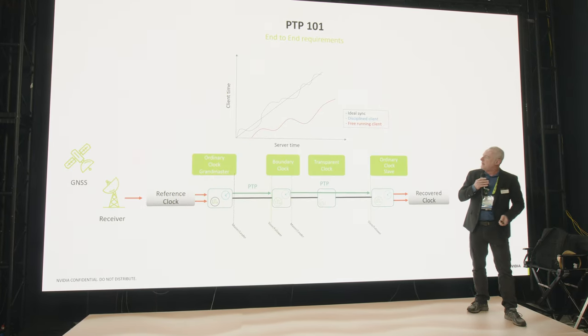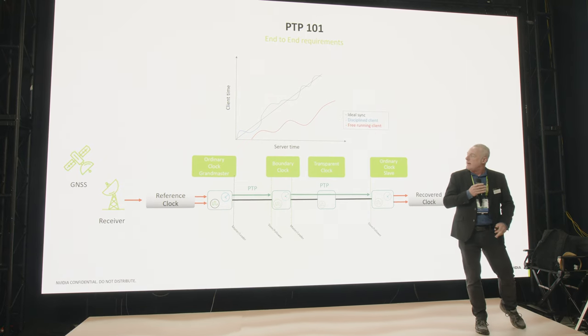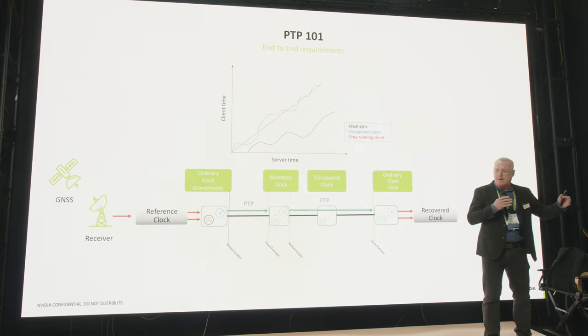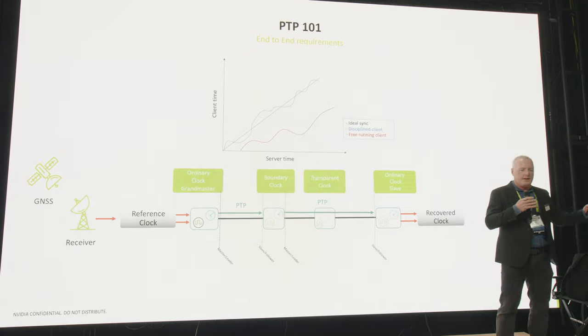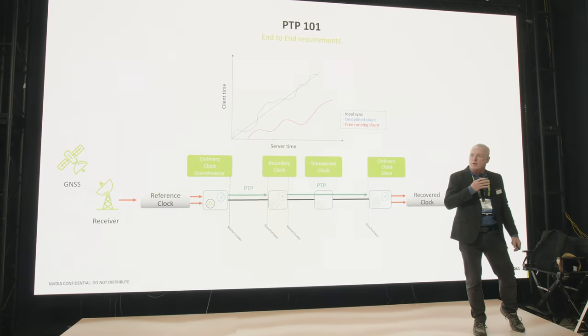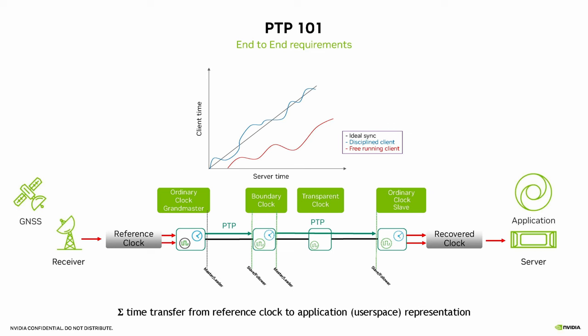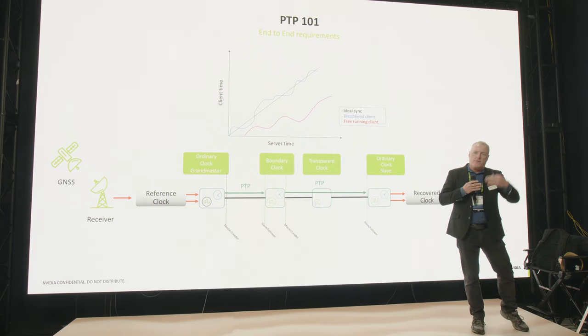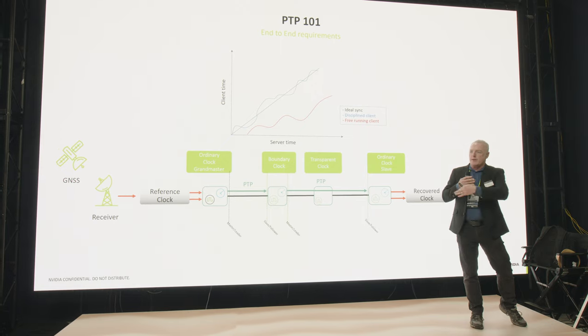PTP — the Precision Time Protocol — is based on IEEE 1588 and satellite time. You have a grandmaster in your facility that manages time from the satellite, and one or more switches between the grandmaster and all systems in your facility. PTP messages propagate timing through the network, and ultimately each system has a PTP hardware clock inside it. With PTP you have the same time on all your systems throughout your facility.